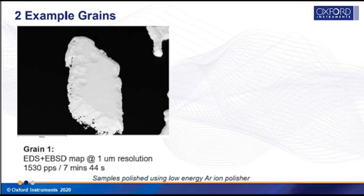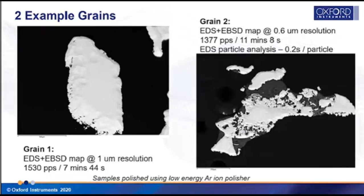We'll look at two contrasting example grains. The first is a relatively uniform shaped grain about a millimeter in length, analyzed using EDS and EBSD with a one micron resolution — analysis took just under eight minutes. Some pitting on the surface was caused by final stage polishing using a low energy argon ion broad beam polisher, because gold is so soft that conventional mechanical and chemical techniques tend to introduce deformation. The second grain is more complicated — analyzed with 600 nanometer resolution in just over 11 minutes — with an additional automated EDS particle analysis using Aztec Feature software at 0.2 second lifetime per individual particle.